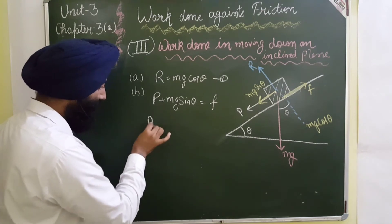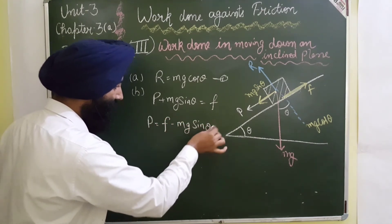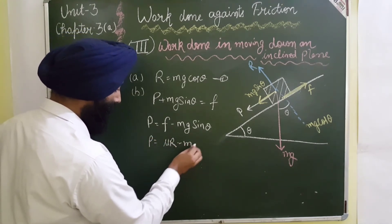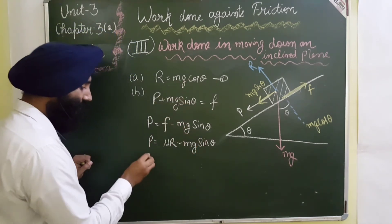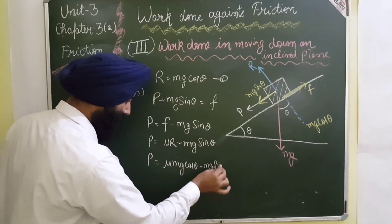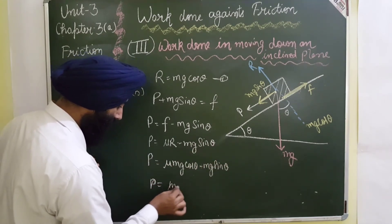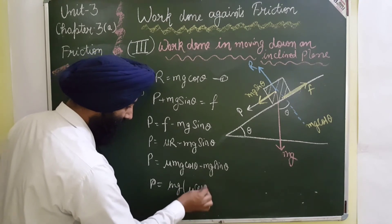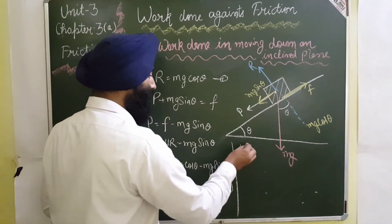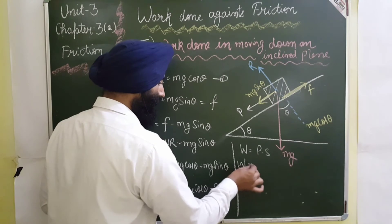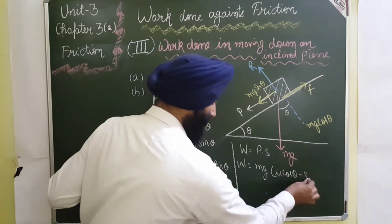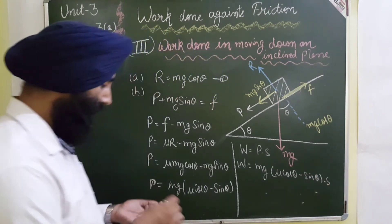Rearranging the equation: P equals F minus Mg sin θ. Frictional force F equals μR, so P equals μR minus Mg sin θ. Substituting R equals Mg cos θ: P equals μMg cos θ minus Mg sin θ. Taking Mg as common, P equals Mg(μ cos θ − sin θ). Work done equals force into displacement S, so W equals Mg(μ cos θ − sin θ) × S.